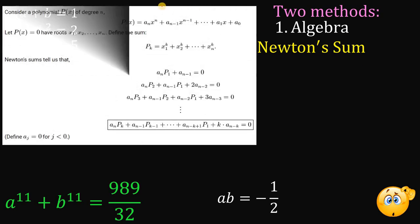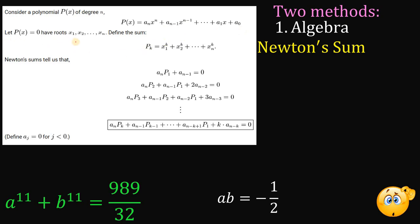Here's the definition of Newton's Sum. Consider a polynomial P of x of degree n: P of x equals a sub n times x raised to n plus a sub n minus 1 times x raised to n minus 1, all the way down to a sub 0. Let P of x equals 0 have roots x sub 1, x sub 2, up to x sub n. Then P sub k is defined as x sub 1 raised to the power of k plus x sub 2 raised to the power of k, and so on. Newton's Sum tells us that a sub n times p sub 1 plus a sub n minus 1 equals 0, and so on.